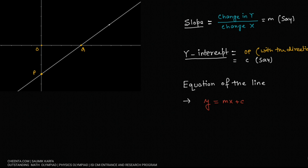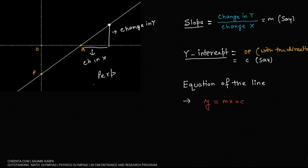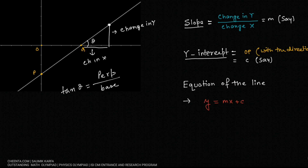How would we find that? From any point on the line, if we drop a perpendicular, the height is the change in y and the horizontal distance is the change in x. Taking this ratio gives us perpendicular over base of a right-angle triangle. If we assume this angle to be theta, then tan(theta) equals perpendicular over base. So the slope of any straight line is tan of the angle it makes with the positive x-axis.